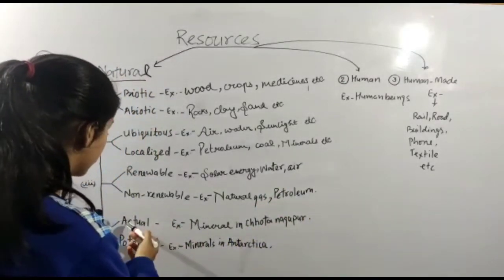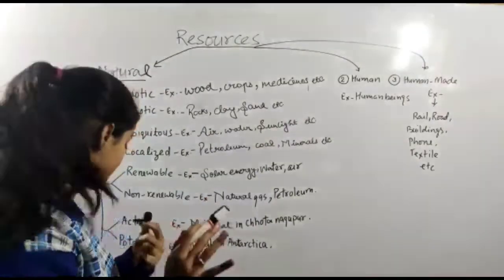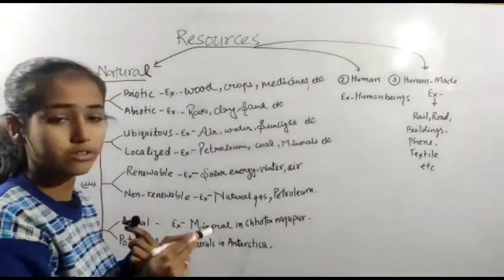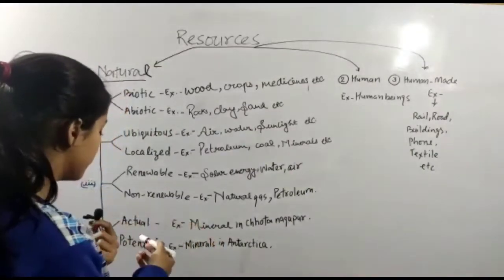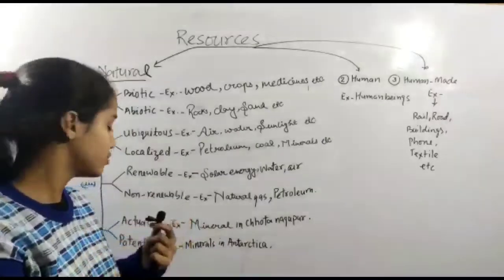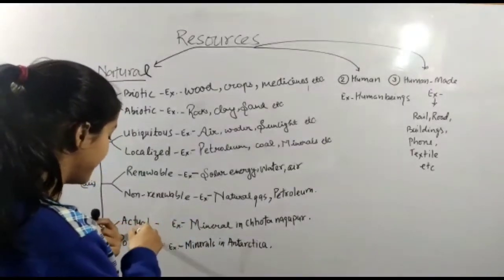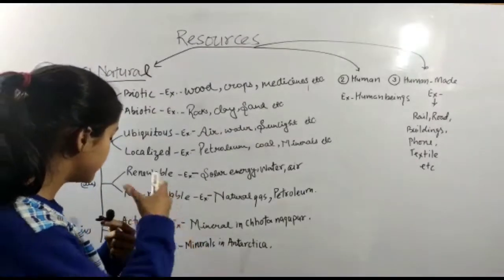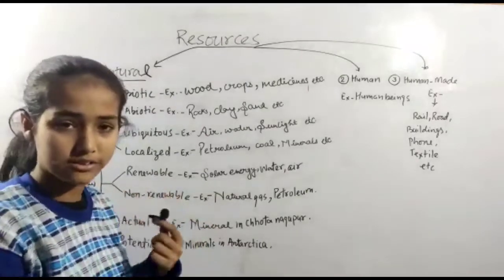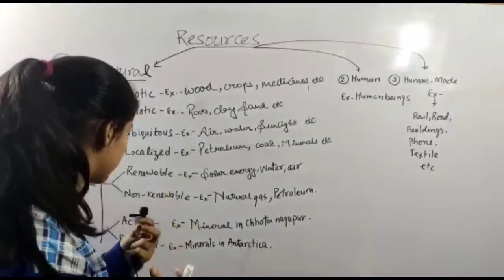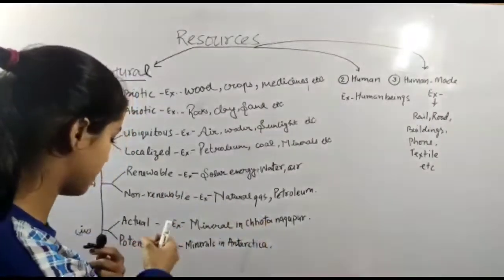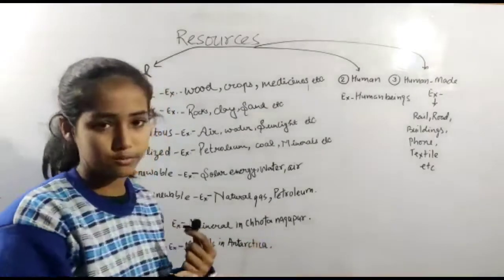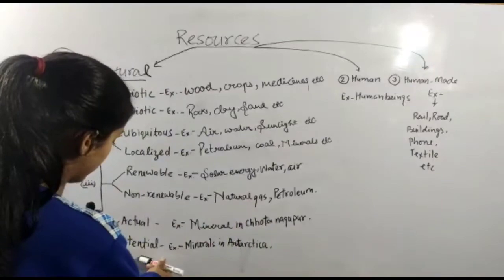Fourth part is actual. Those sources we are known to us - we know their locations, quantity, and we have full knowledge of these resources and we have the technology to exploit them and use them. For example minerals in the Chota Nagpur Plateau.